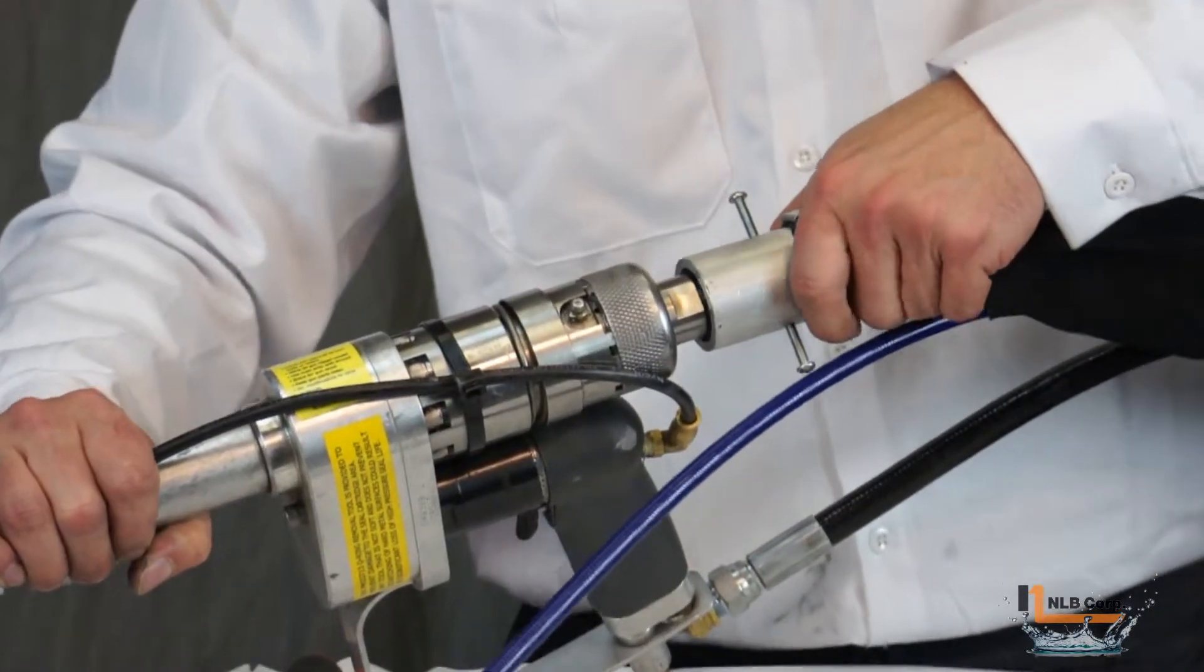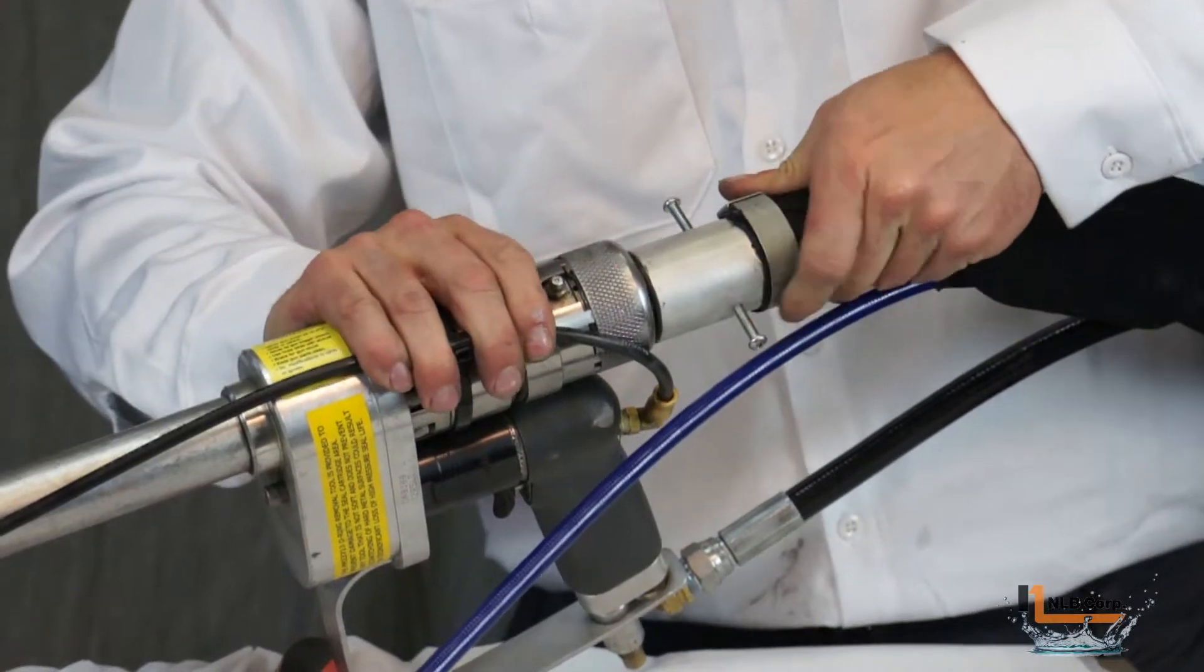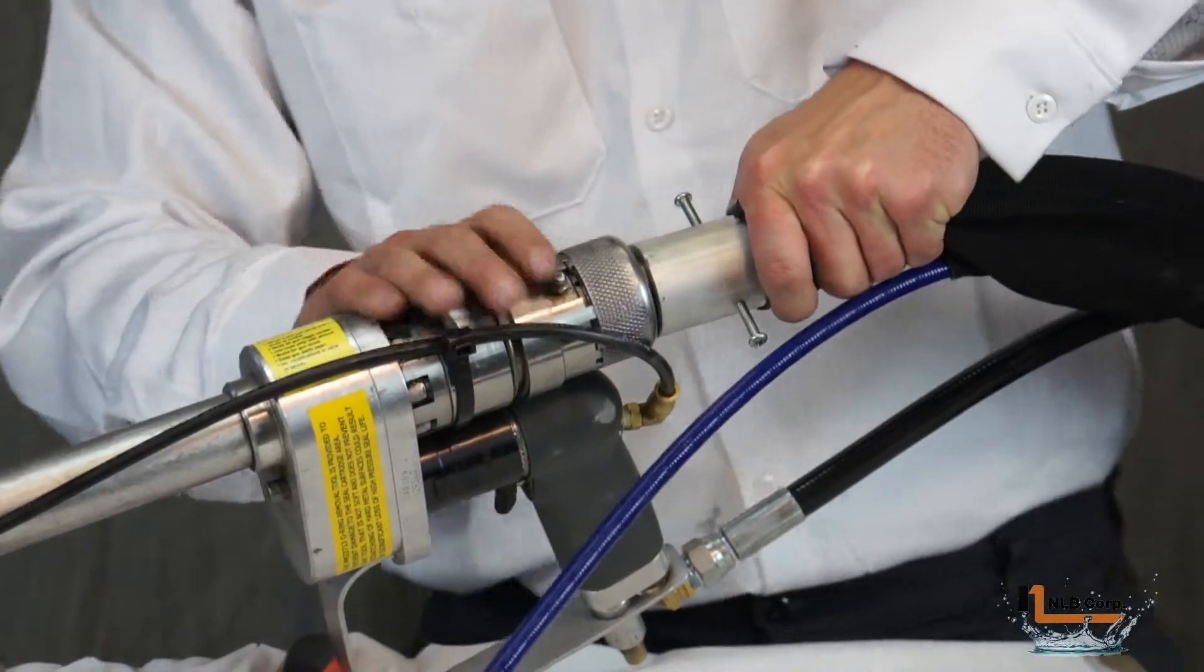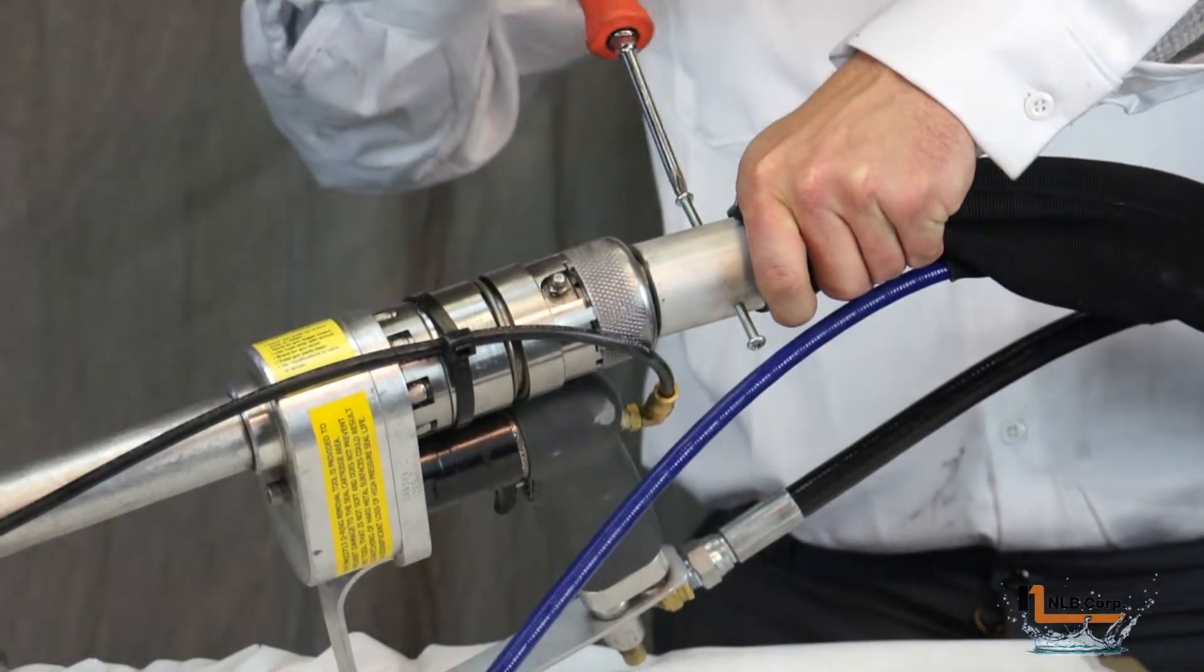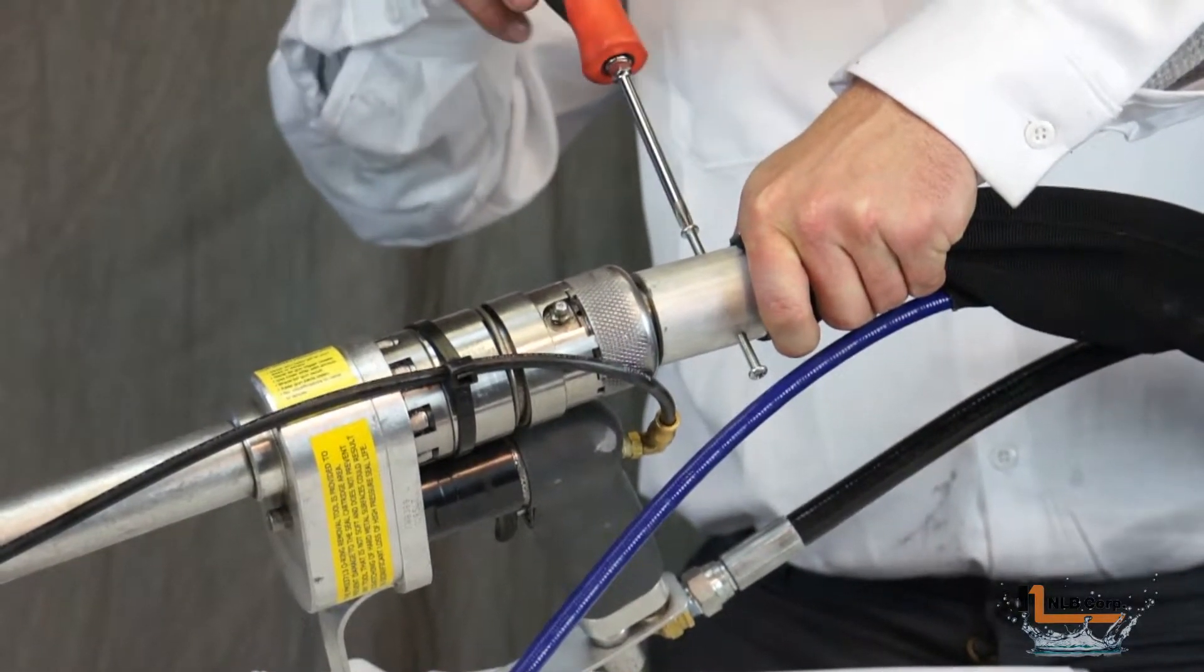The DM14150 hose assembly includes a safety shroud with a metal guard on the end. This guard is designed to encase the high pressure fittings and will minimize the effects of any leaks that may occur. With the guard in place, tighten the two screws.